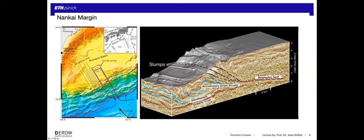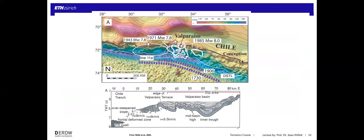This defines the Kumano basin — a forearc or wedge top basin. The sediments are only gently deformed: some gentle folding or tilting particularly along the front, but relative to the underlying accretionary complex they are essentially undeformed. This indicates that at the time of their deposition, most of these structures were inactive. This is a true wedge top forearc basin — different from the earlier examples where sediment was deposited on arc basement. Here almost everything is deposited on top of the accretionary wedge itself.